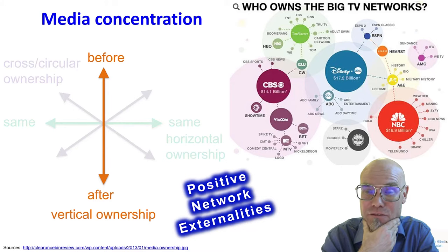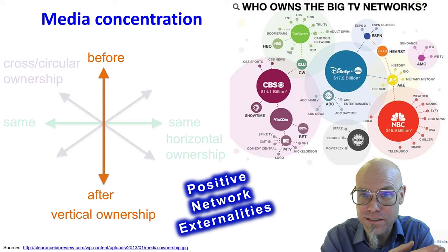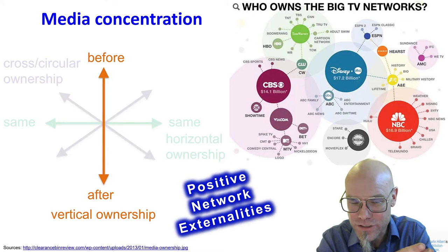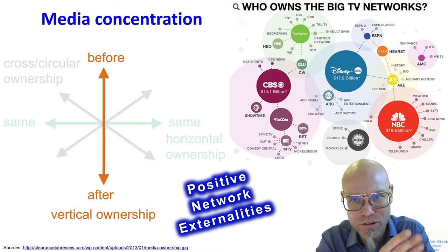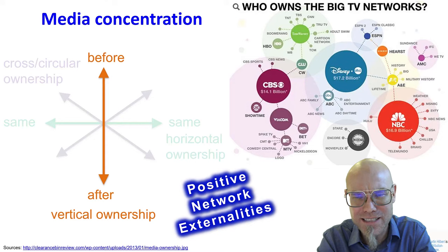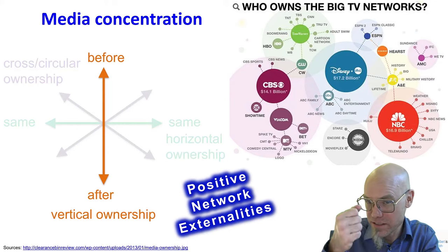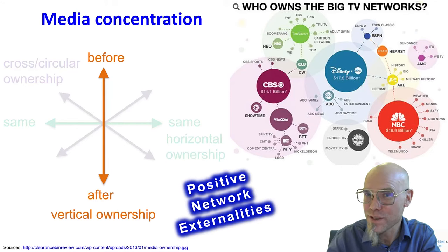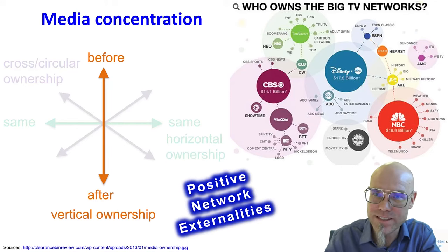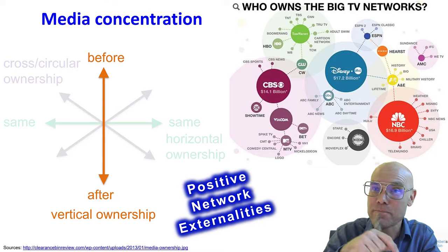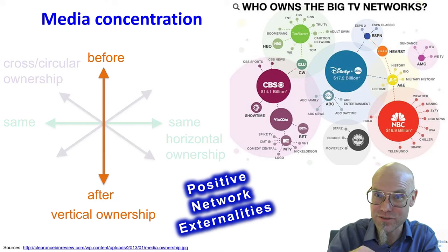So instead of buying batteries from somebody else, I just create my own batteries. Many companies do that in the traditional world too — Costco has its own brand, Target has its own brand. What they do there is vertical ownership integration: they purchase or compete with one of their suppliers and sell their own product on their platform. Because of positive network externalities, they already have all the consumers, they know what they want, and they have access to them.